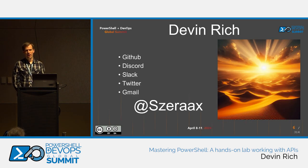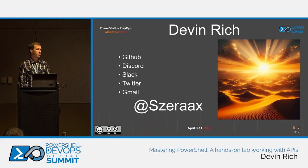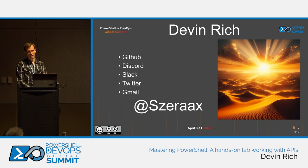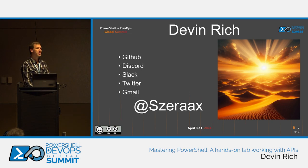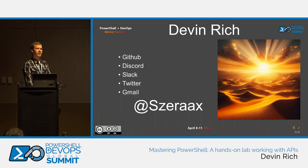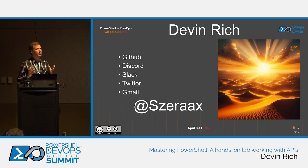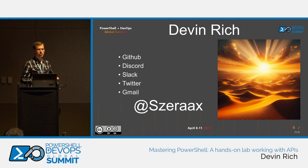The big thing I hope you get out of this presentation is an understanding of how to read different API documentations — that is the most important thing you will learn today. I got into PowerShell more than 10 years ago, using PowerShell 1.0 on Windows XP. From the very beginning, I saw the flexibility it had working with objects, and it was just entrancing for me.